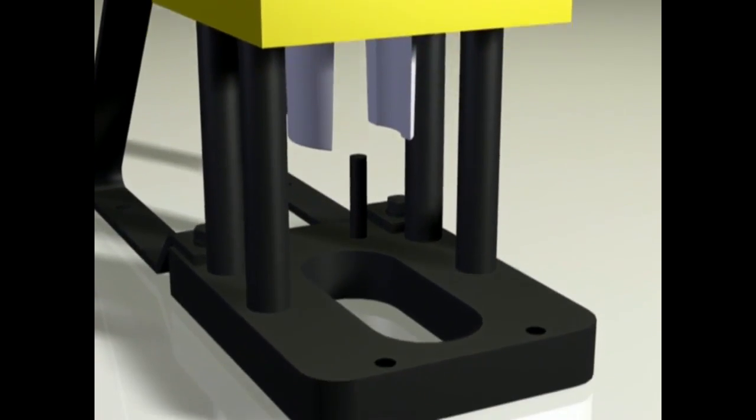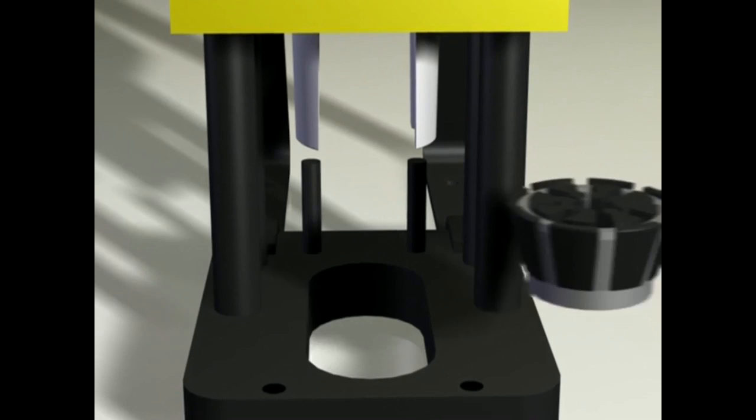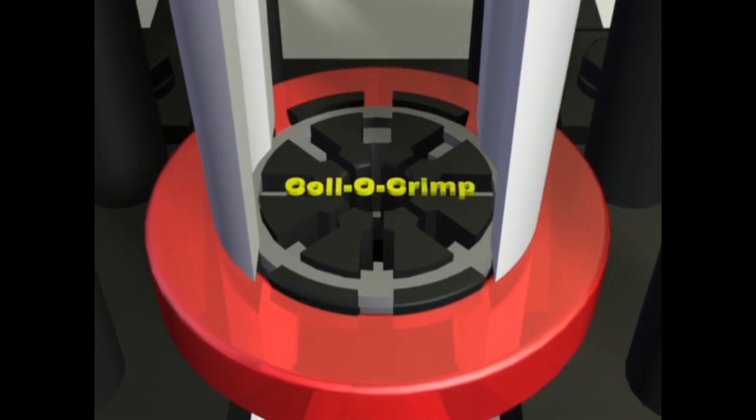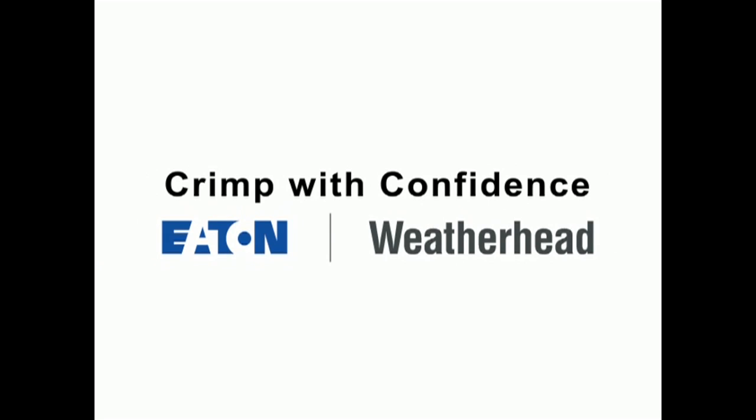By following the proper setup and operating instructions, you can make dependable Eaton Weatherhead hose assemblies every time using the ColoCrimp system. Crimp with confidence. Connect with Eaton Weatherhead.